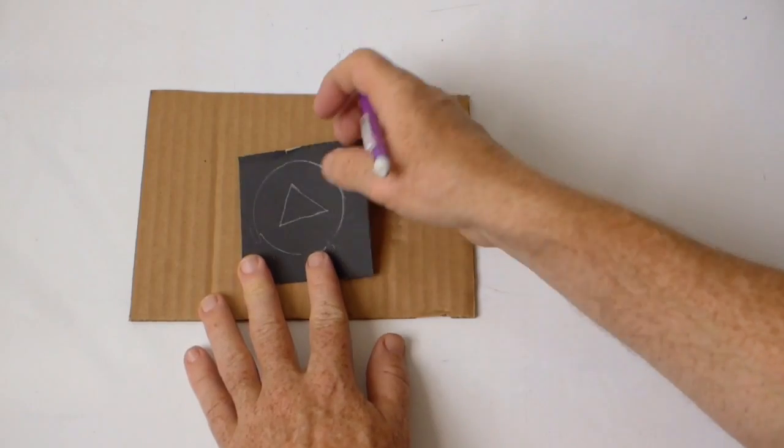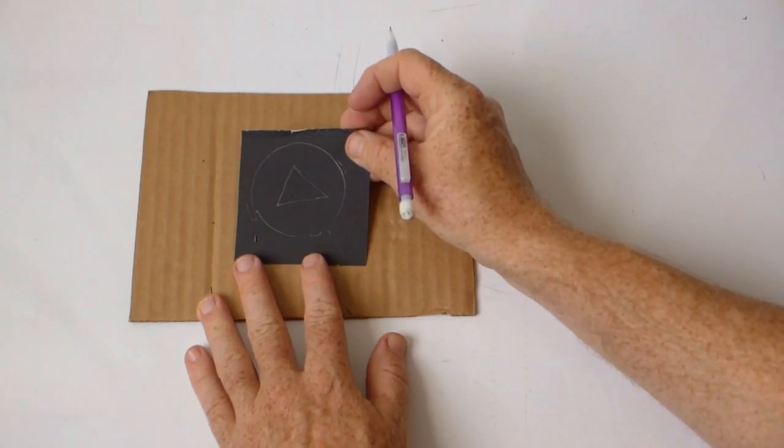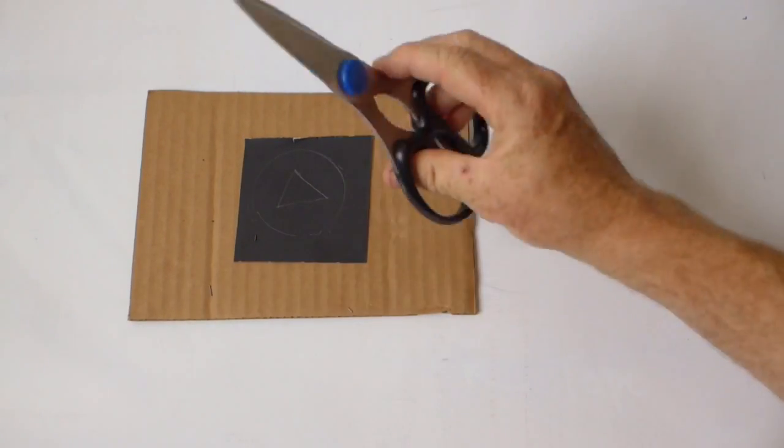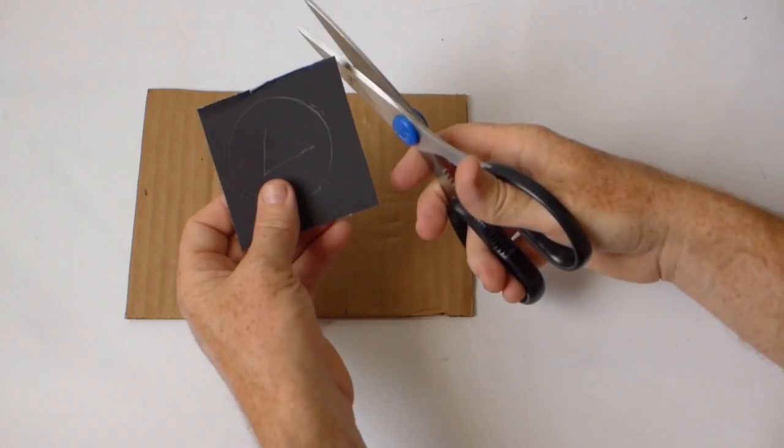Okay, I've got all that done now. And you can see it's just a circle with a triangle in the middle. And now I'm going to cut everything out. So I'm going to use the scissors to cut out the circle.